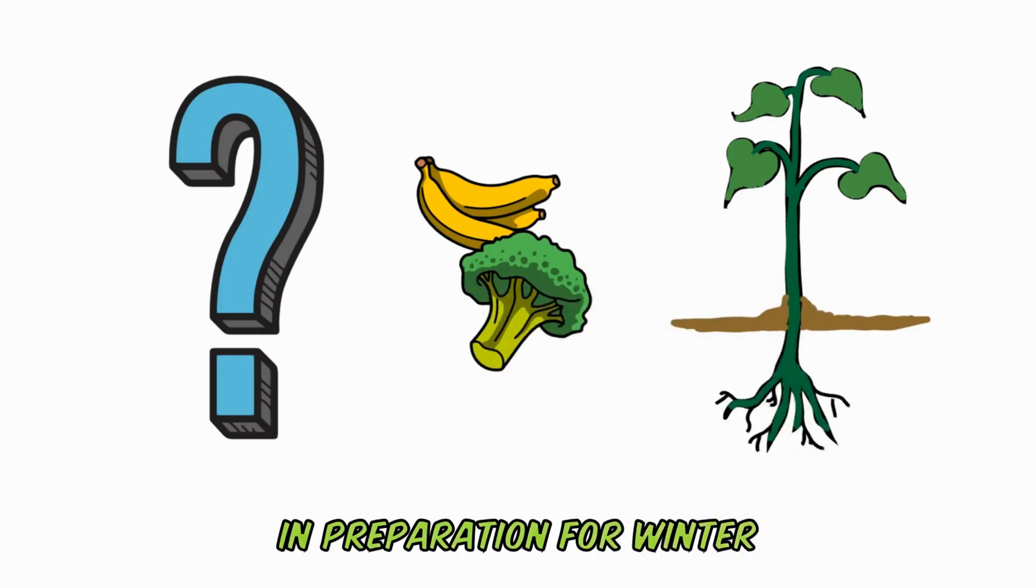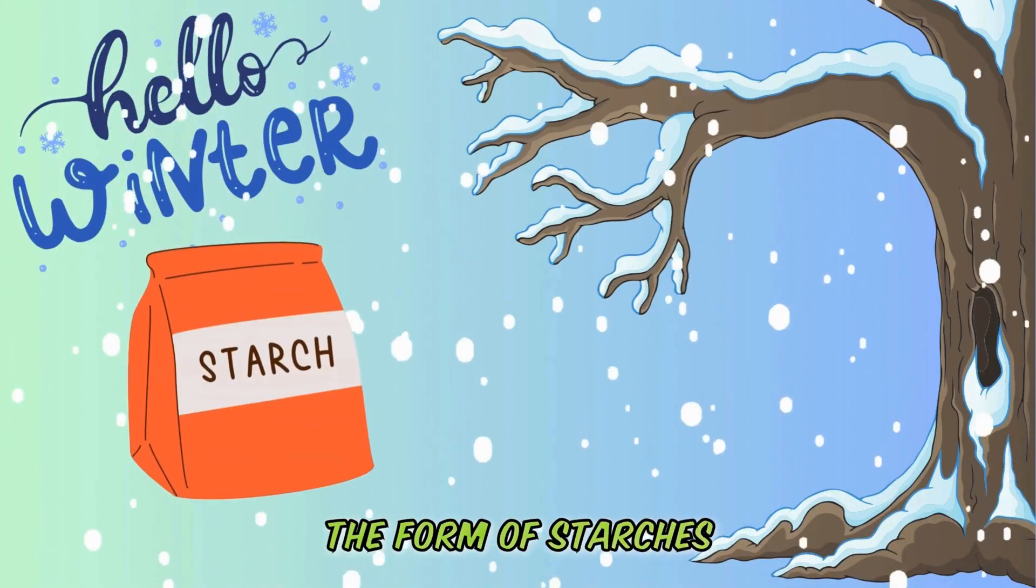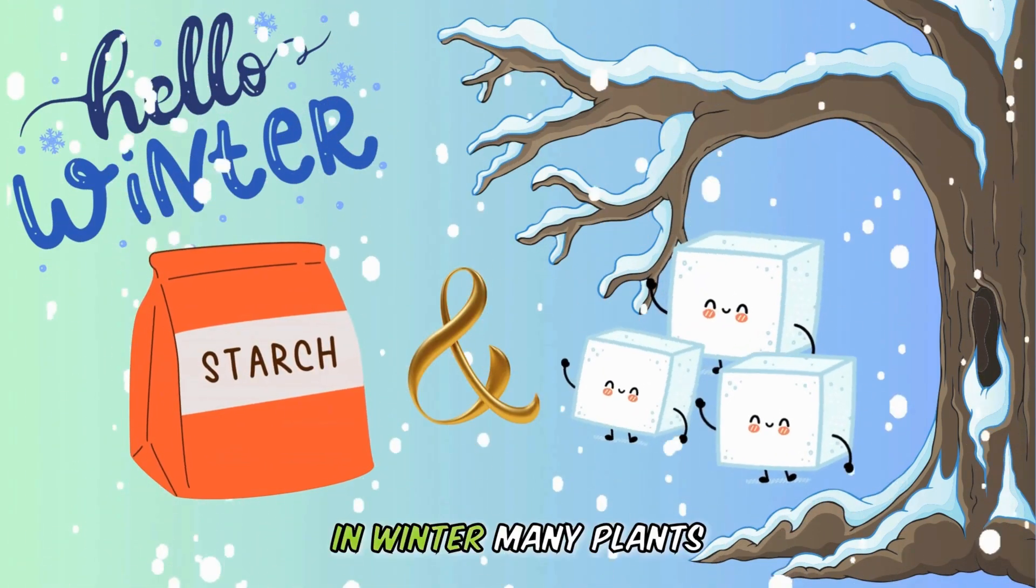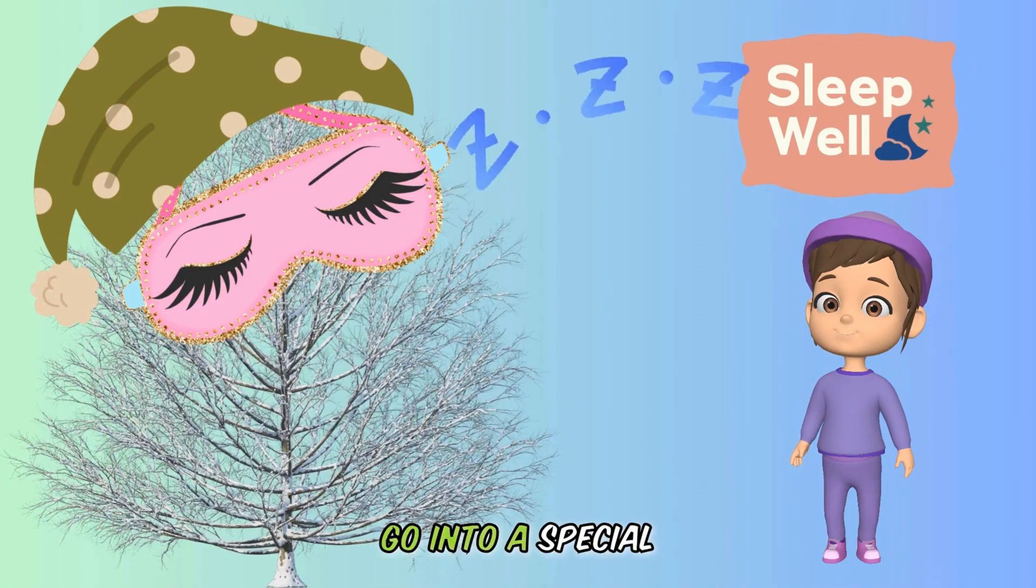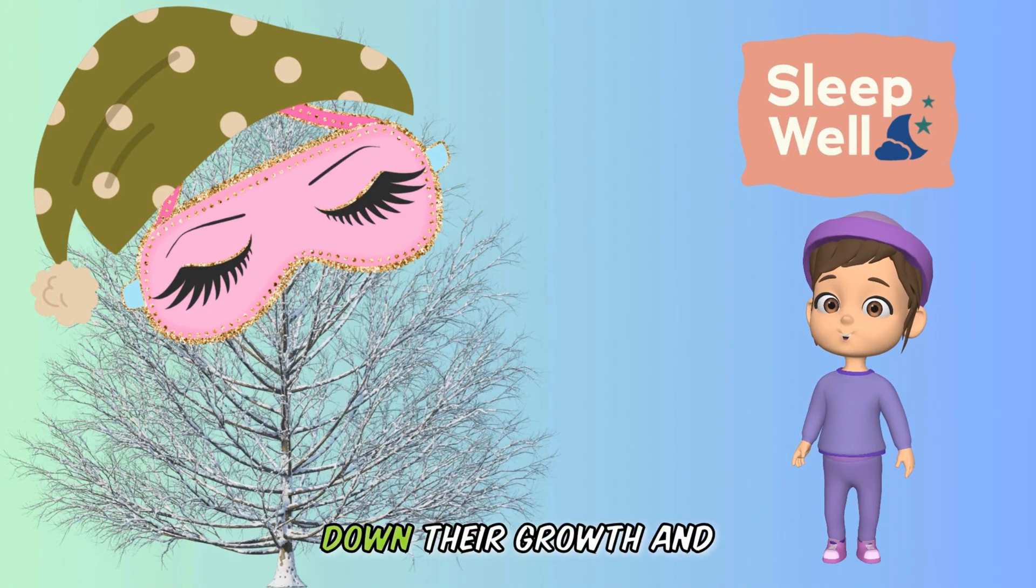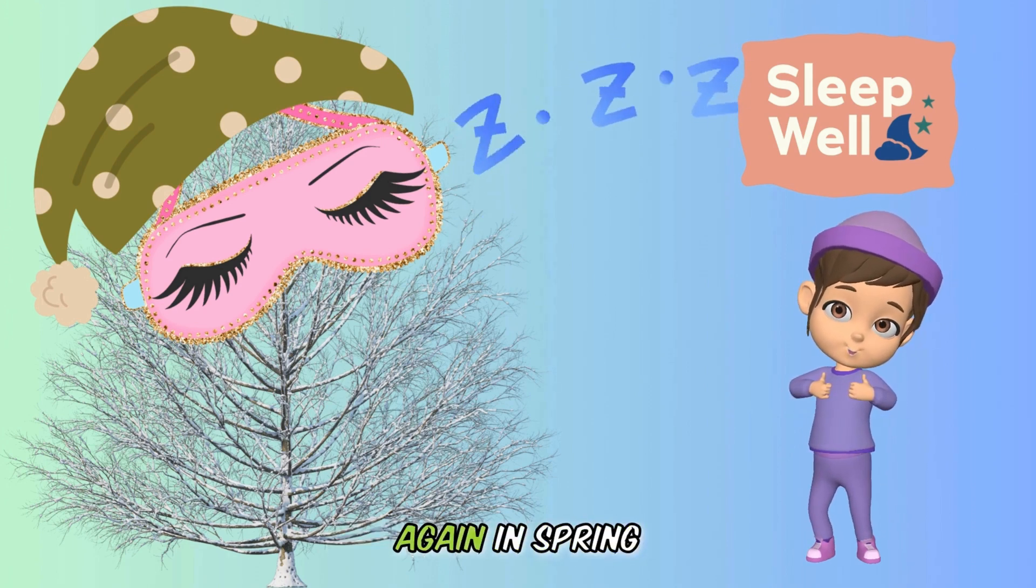In preparation for winter, plants store energy during the growing season in the form of starches and sugars in their roots, stems, and branches. In winter, many plants go into a special sleep called dormancy. During this time, plants slow down their growth and don't do as much work as usual. This helps them save energy until it's warm again in spring.